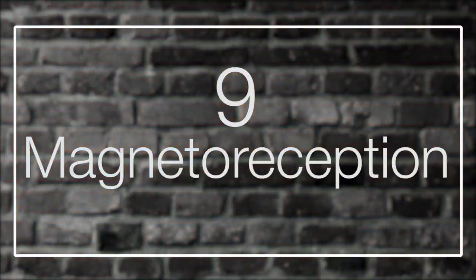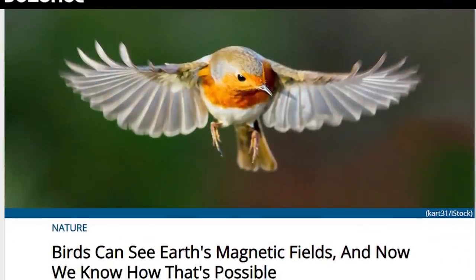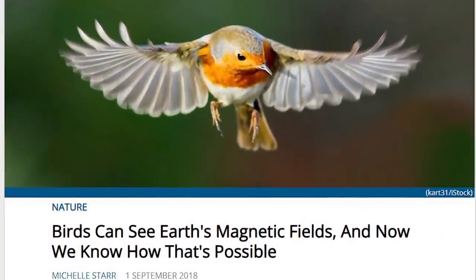Number 9: Magnetoreception. You may have heard that birds are able to migrate by following the magnetic field of the earth. That's how they seem to always show up in the same place every year and navigate hundreds or even thousands of miles. It's a very cool theory to explain what to humans is remarkable behavior, but we're still not sure how it works. And even weirder, we might be able to do it as well.